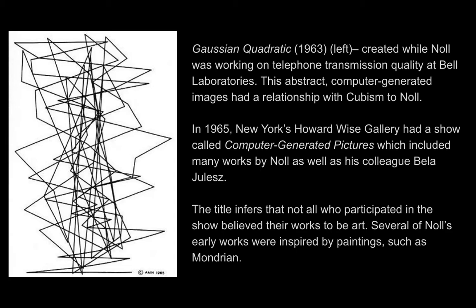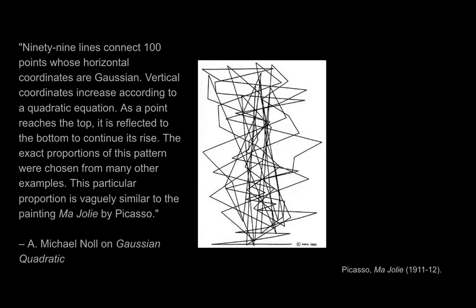This is Gaussian Quadratic from 1963, created while Knoll was working on telephone transmission quality at Bell Laboratories. This abstract, computer-generated image had a relationship with cubism to Knoll. In 1965, New York's Howard Wise Gallery had a show called Computer Generated Images, which included many works by Knoll as well as his colleague Bella Julis. The title infers that not all who participated in the show believed their works to be art. Yet several of Knoll's early works were inspired by paintings by Picasso and Mondrian.